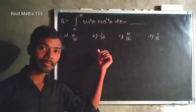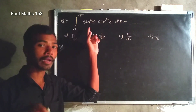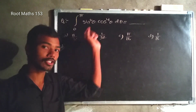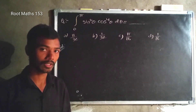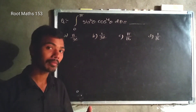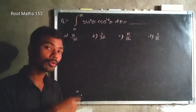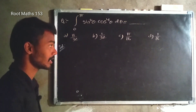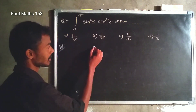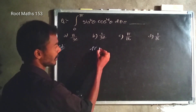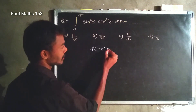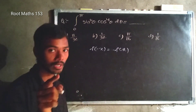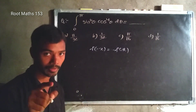We have the Wallis formula limit 0 to pi by 2, but here we have integration 0 to pi. So we need to convert: check whether f(pi minus x) equals f(x) or minus f(x) and apply the method.